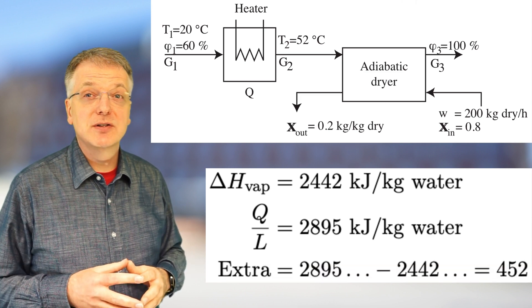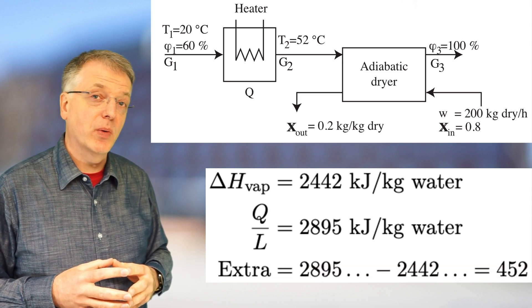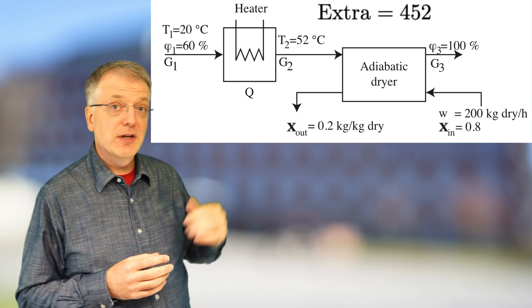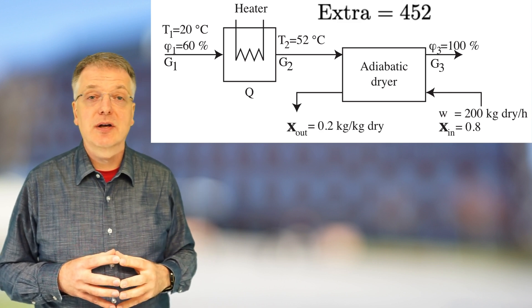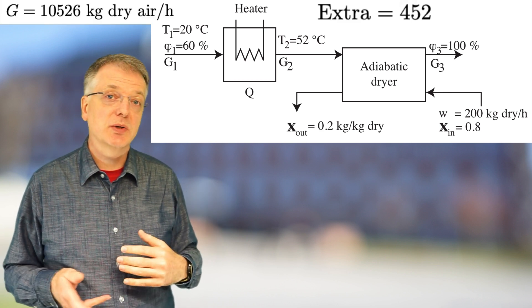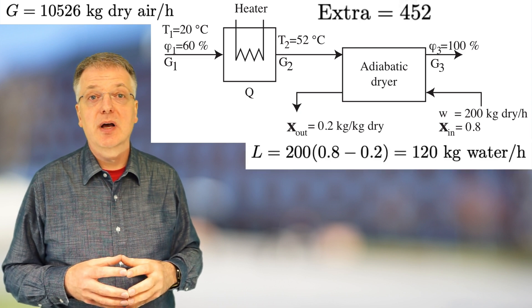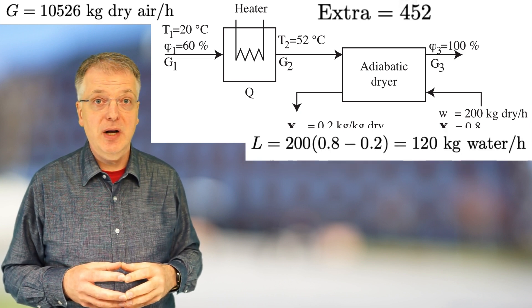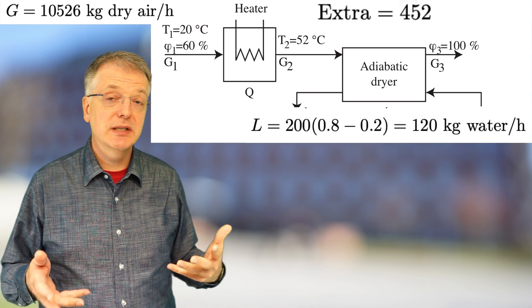So that is 452 kilojoules per kilogram more. The fresh air flow was calculated to 10,526 kg per hour, and the amount of water evaporated to 120 kg per hour. So what do we need energy for?